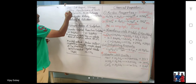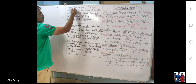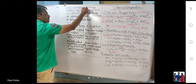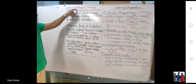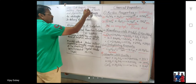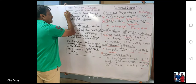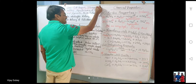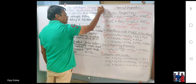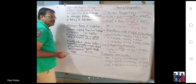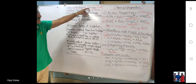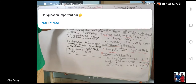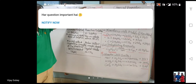Uses of sulfuric acid: it is a very important lab reagent — every lab should have it. It is used in storage batteries such as lead storage batteries used in inverters and automobiles.